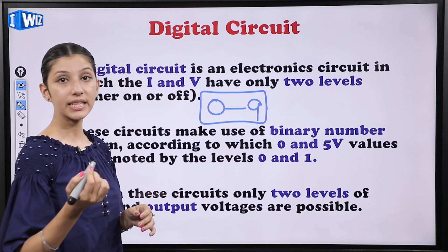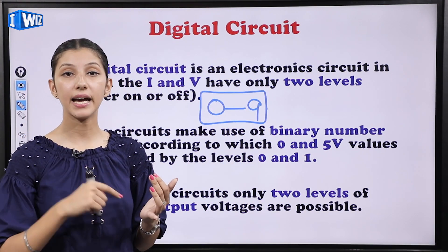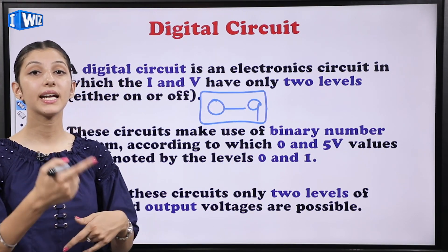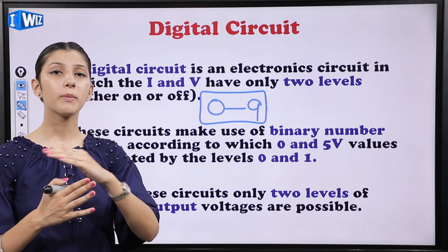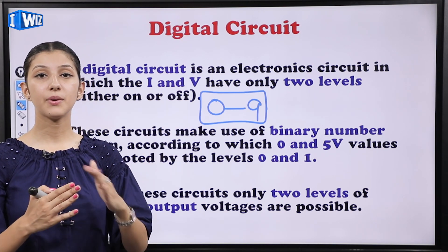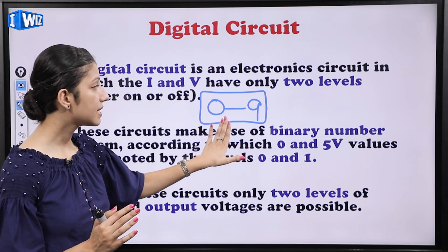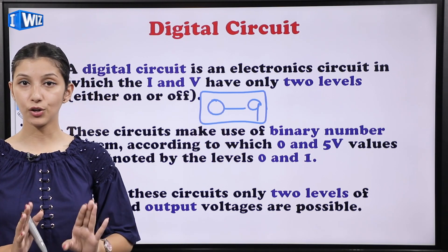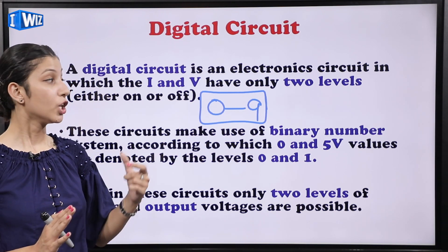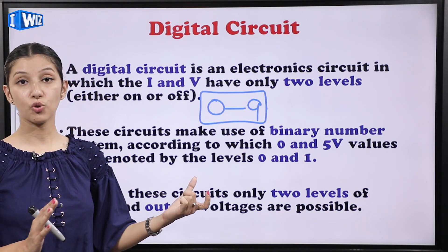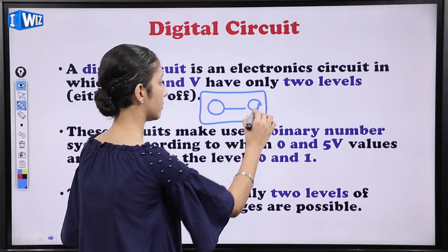Decimal number system matlab zero to nine. Jab hum counting karte hain — one, two, three, four, up to nine — uske baad 10, 11... Koi bhi count le lijiye, woh saare jo digits ban rahe hain, woh zero to nine ke beech mein hain. Is type ke system ko hum bolte hain decimal number system.